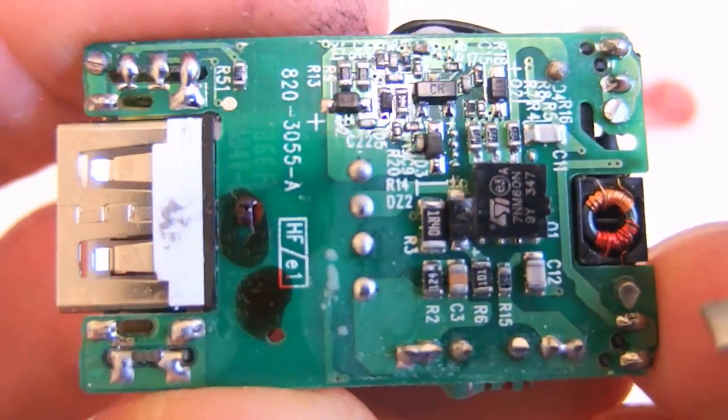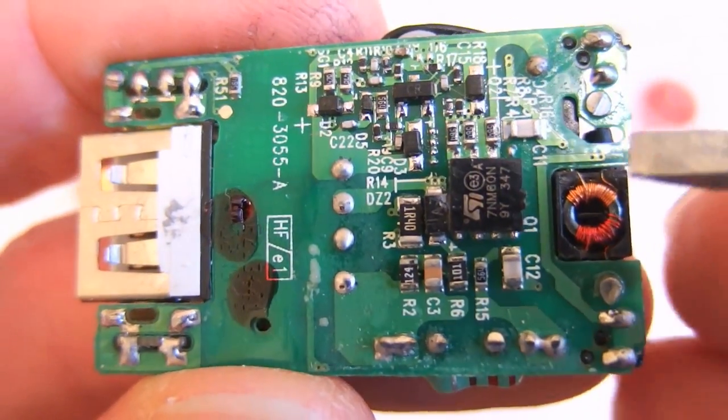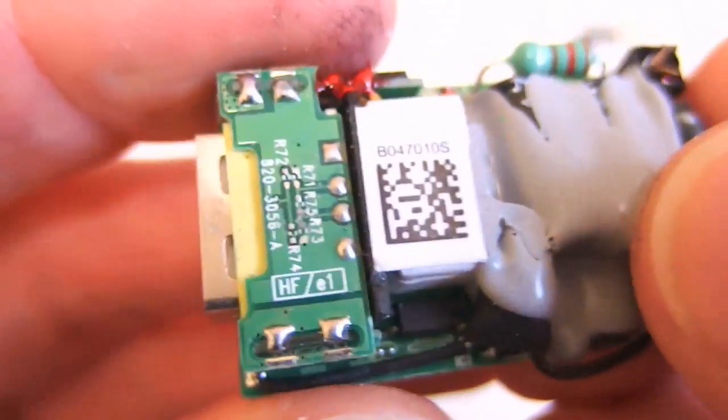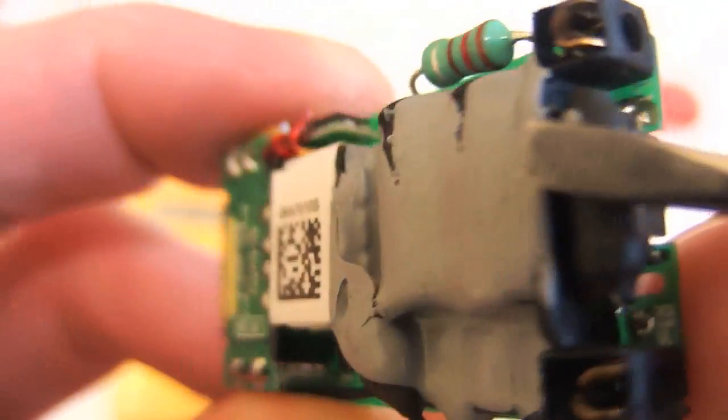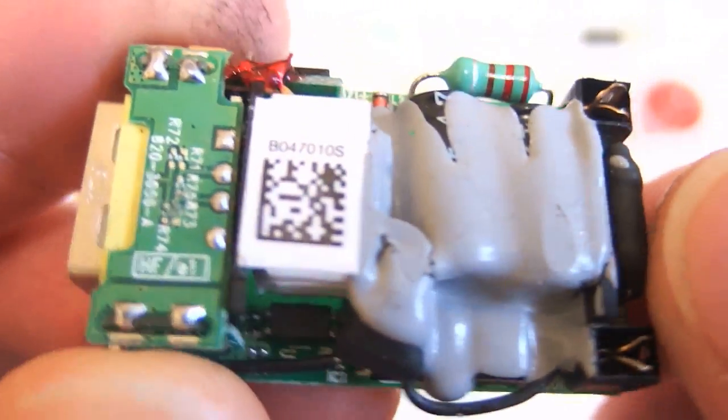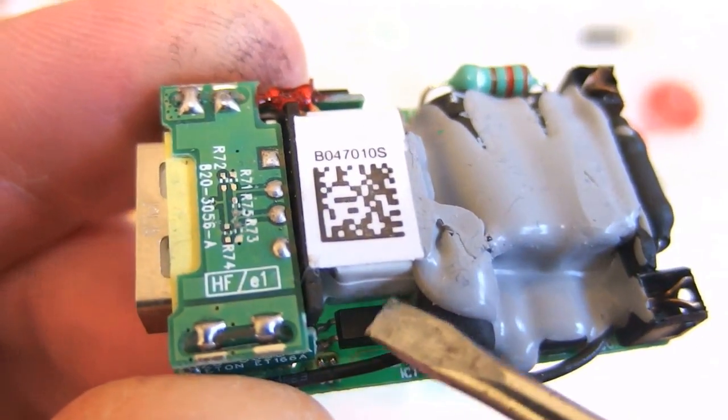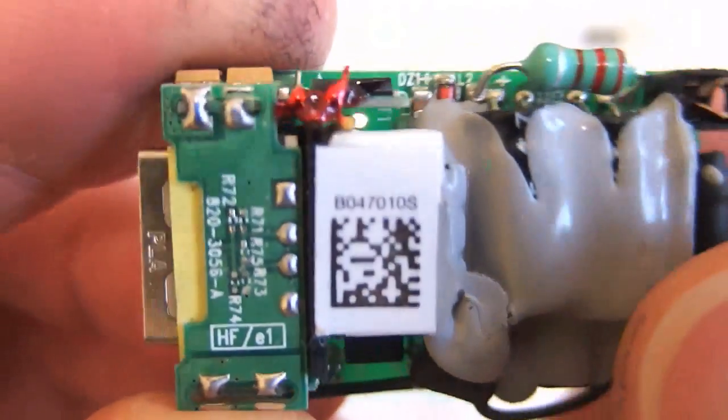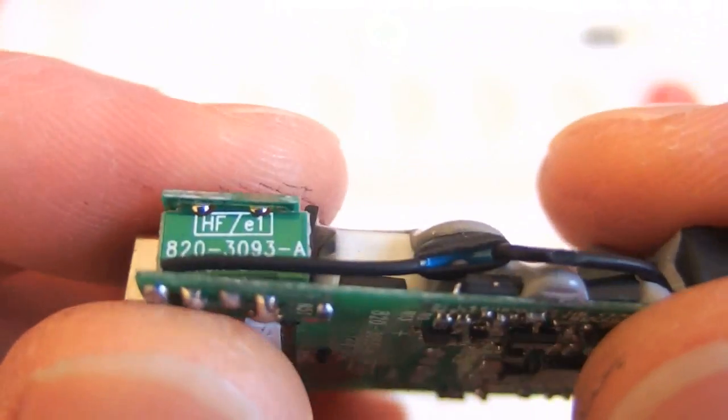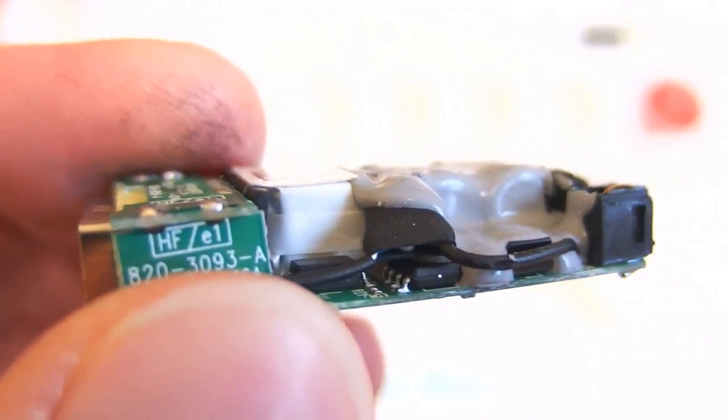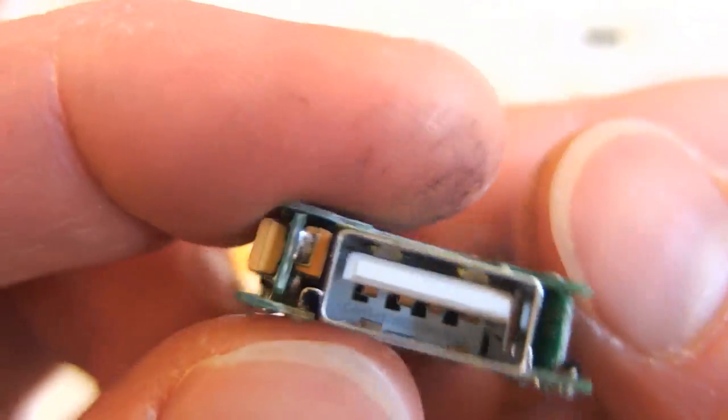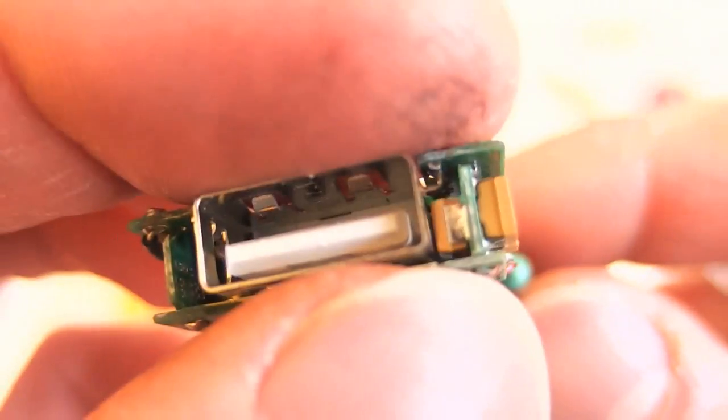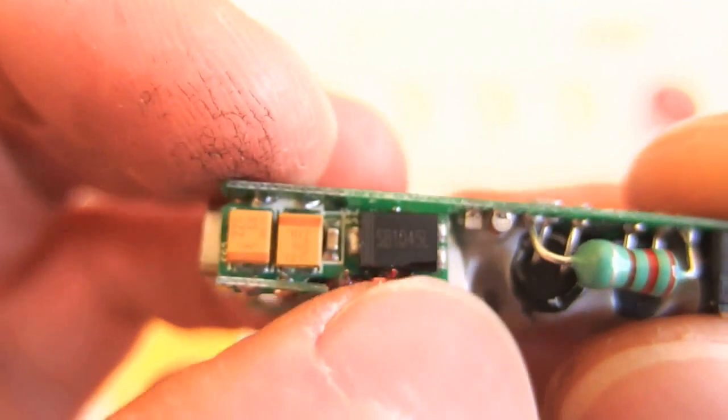There's a common mode filter, there is a differential filter, two primary capacitors, of course a fuse here. It's in resin. There's a transformer, optocoupler here, some driver IC here. There is the USB connector, tantalum capacitors here, at least three of them, the Schottky diode.